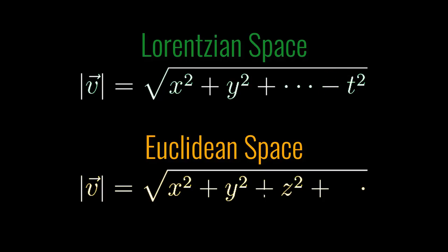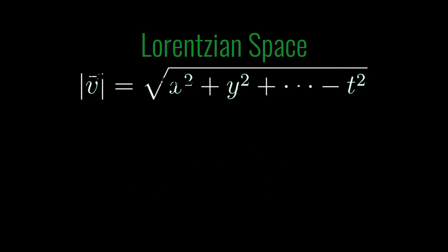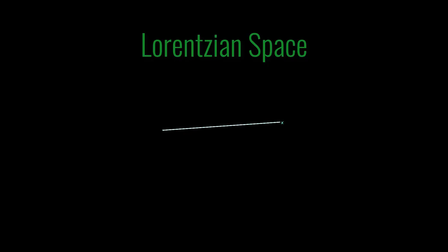So in particular if you try and draw a picture of Lorentzian space, well I'm going to sort of draw three-dimensional space. You think of a three-dimensional space so here there's an x-axis and a y-axis and a z-axis.